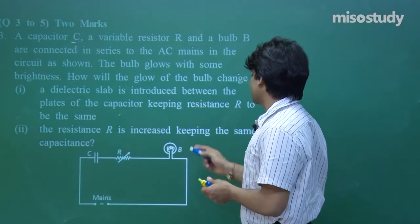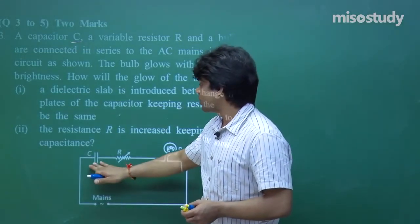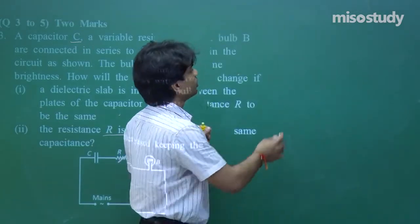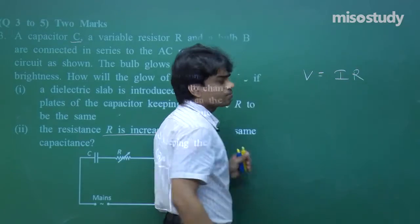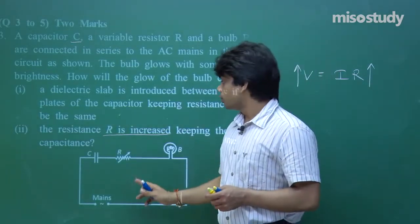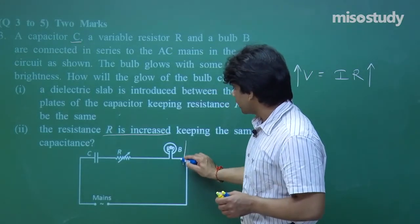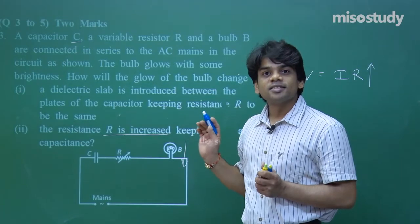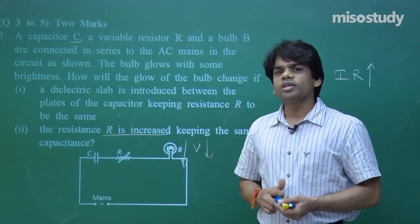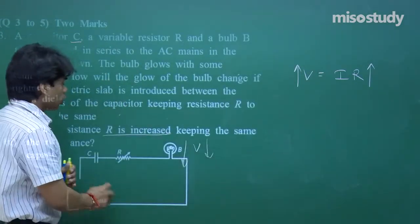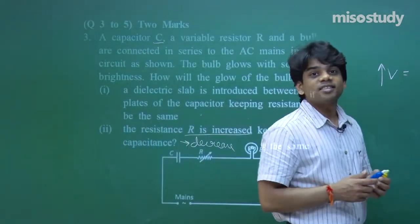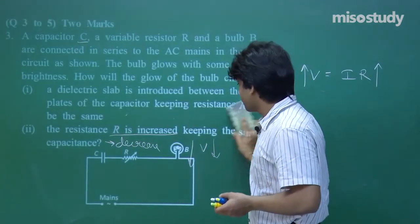For the second part: the resistor R is increased, keeping the same capacitance. Voltage across the resistance is V = I·R. If R is increased, the voltage across the resistor increases, so the overall voltage across the bulb increases — but wait, that means voltage across the bulb decreases in the reverse sense. So the glow is going to decrease.